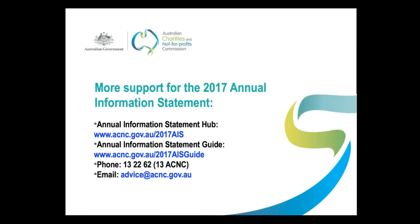For more on this and other sections of the 2017 Annual Information Statement, refer to the guide and other resources at the Annual Information Statement Hub, found at www.acnc.gov.au/2017AIS. If you have any questions or need specific assistance, you can call us on 13 2262 or email us at advice@acnc.gov.au. I hope this has been useful and thanks for watching.